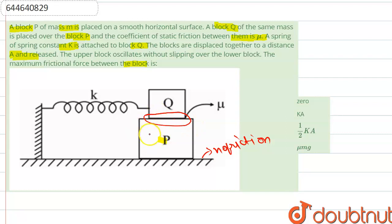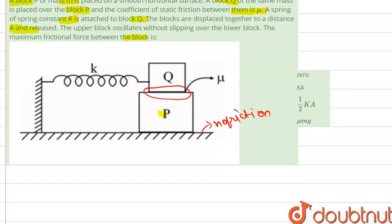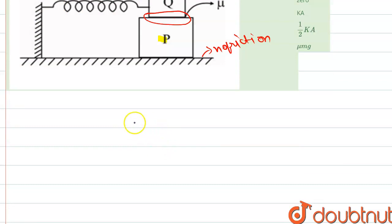Firstly, we have the formula for omega in a spring-mass system: ω = √(k/m). Here, the spring constant is k, and the mass is 2m because both blocks are moving simultaneously, so the total mass is 2m.